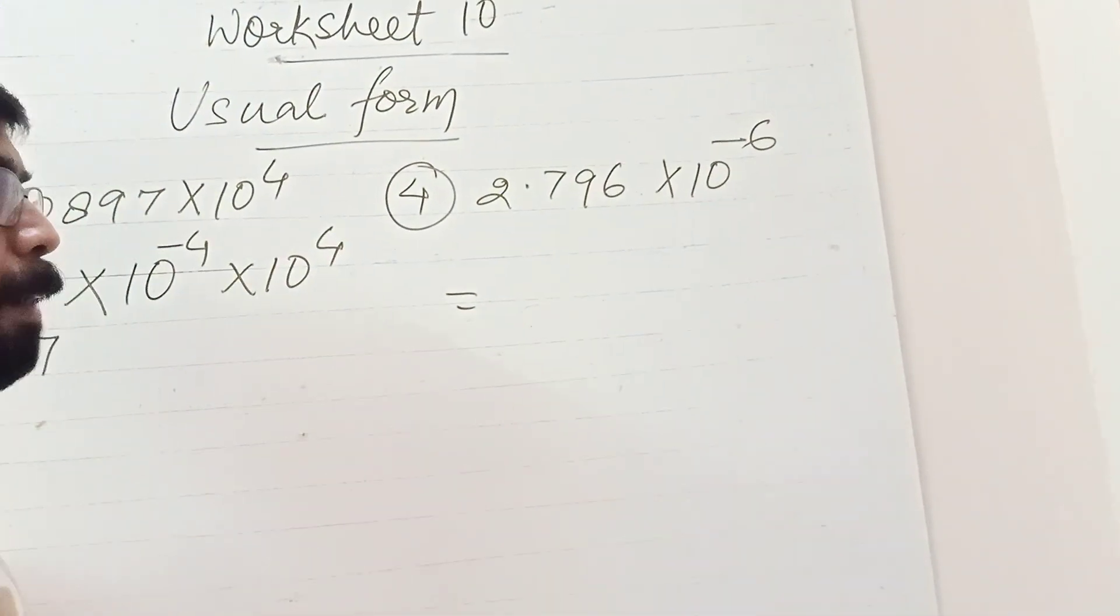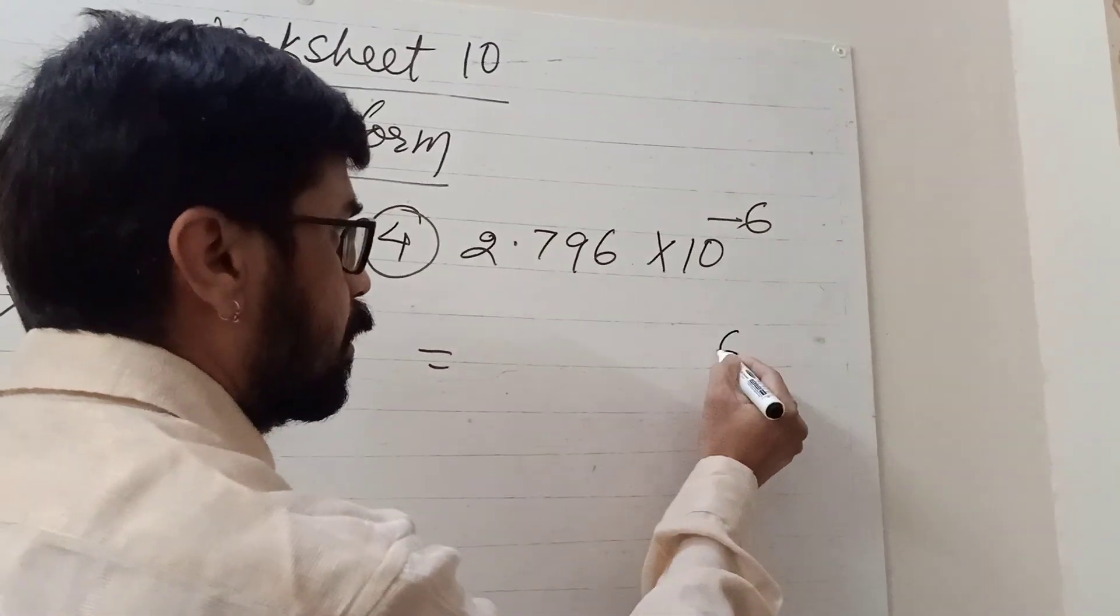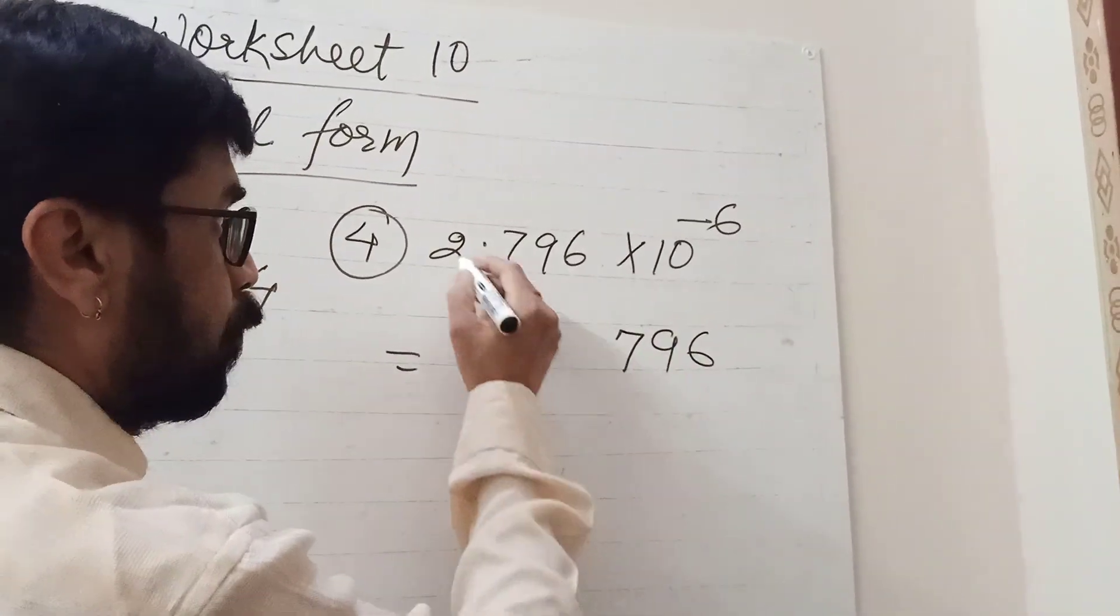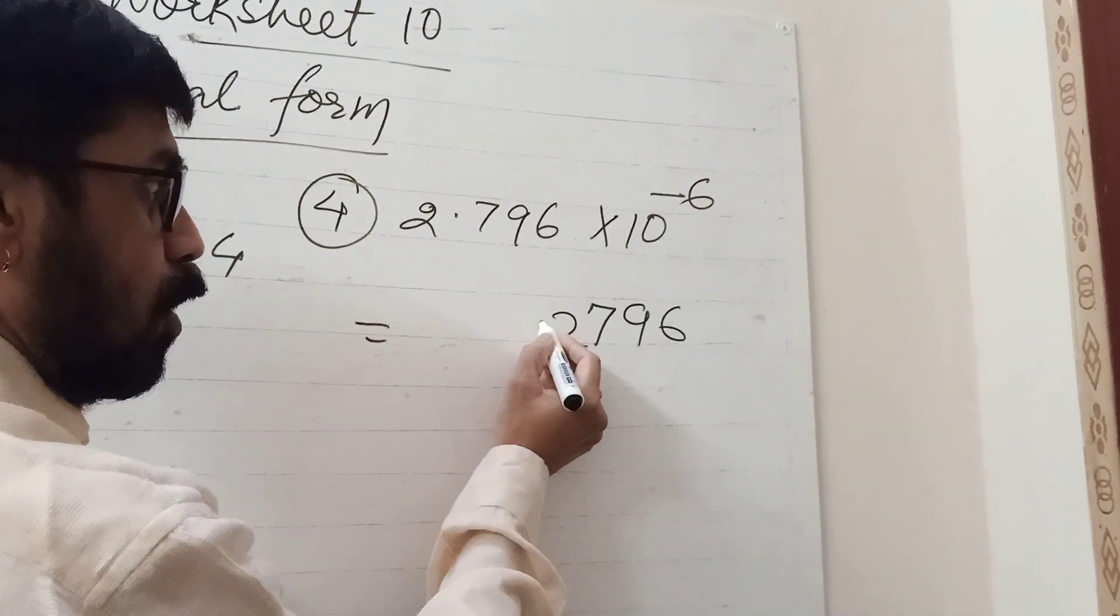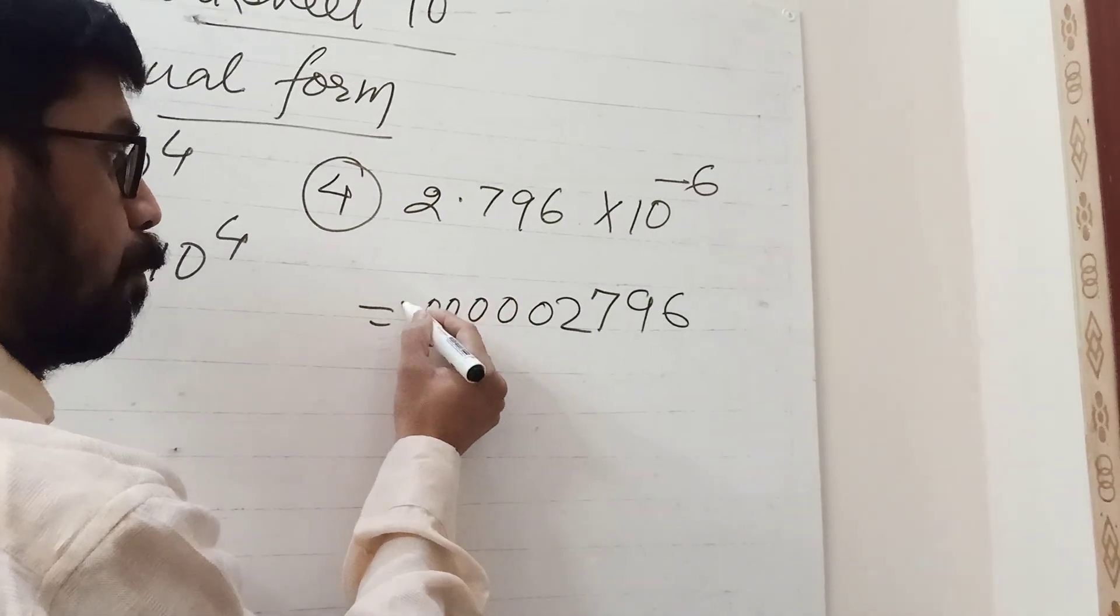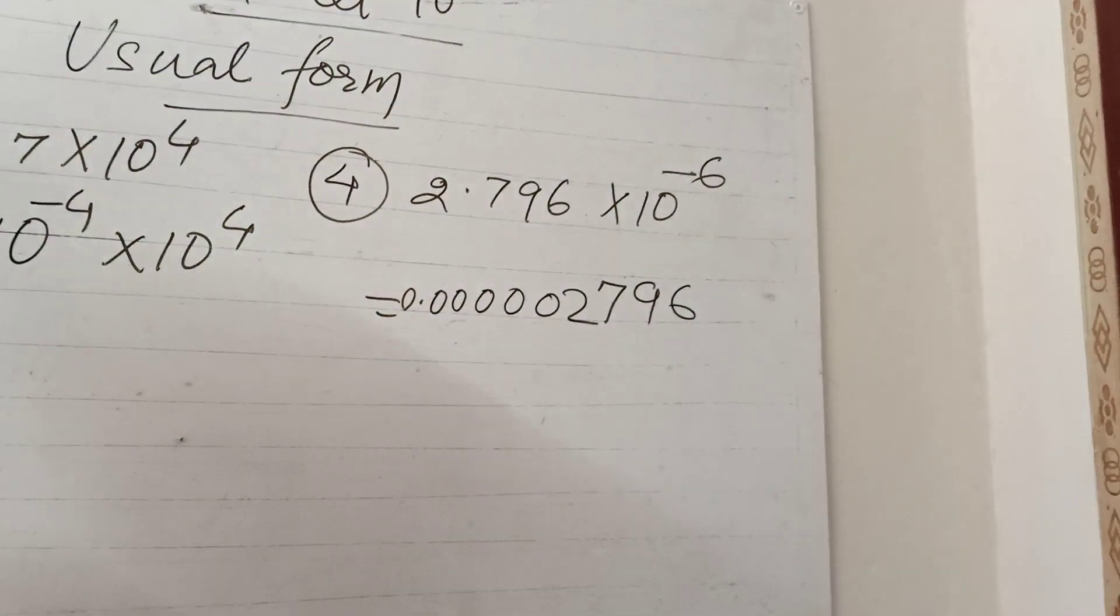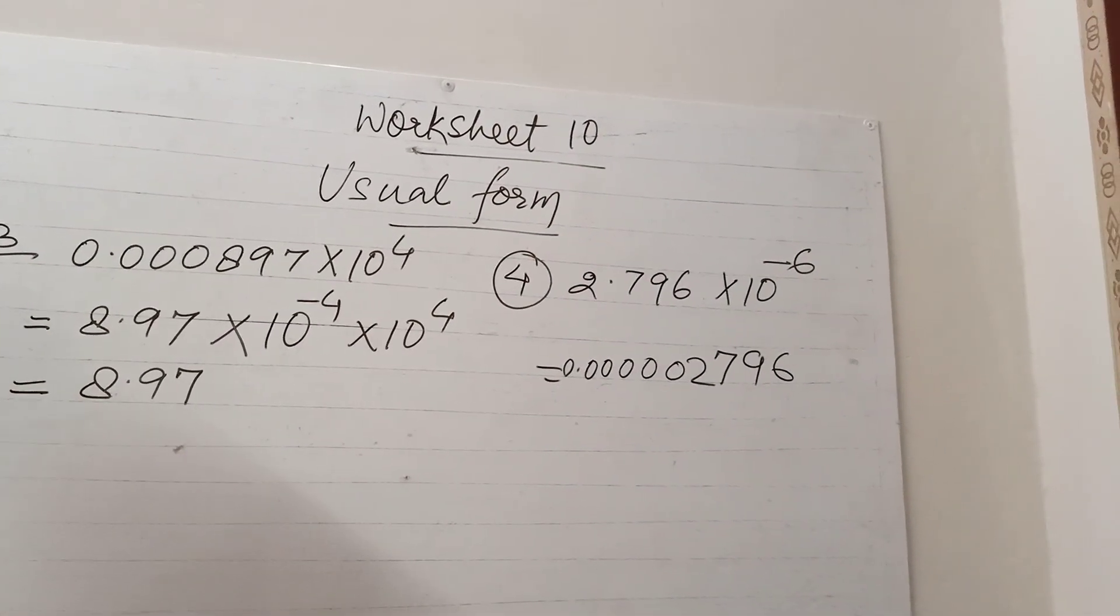Starting from 2.796, the decimal is shifted a total of six places: one, two, three, four, five, six. The answer is 0.000002796.